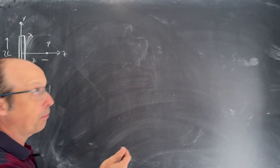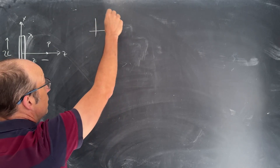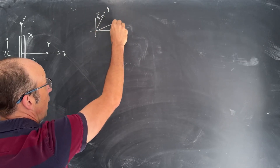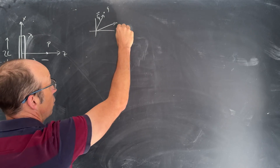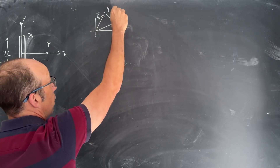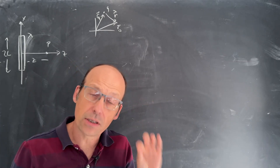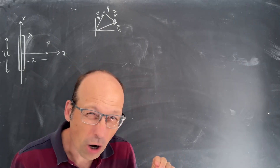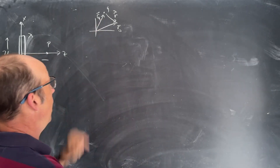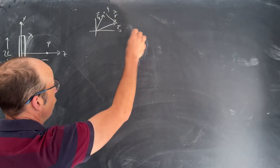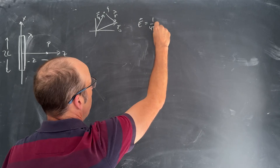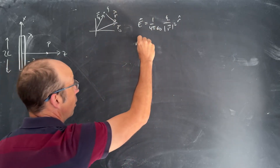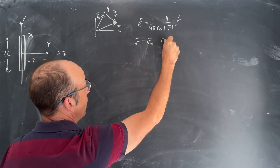We have the electric field due to a point charge. In general, if I have a charge q located at vector rq, and an observation location at ro, I can find the vector r. E is going to be 1 over 4 pi epsilon naught, q over the magnitude of r squared, r hat. That r is going to be the observation location minus the charge location.